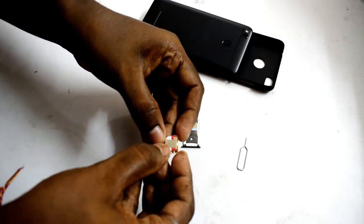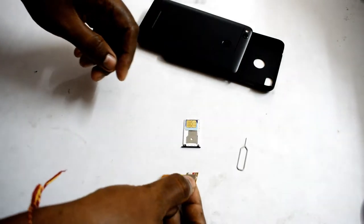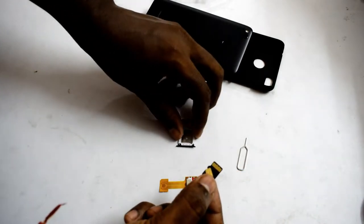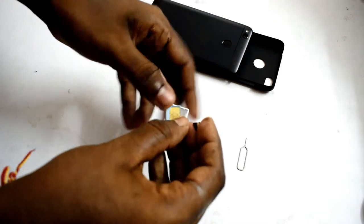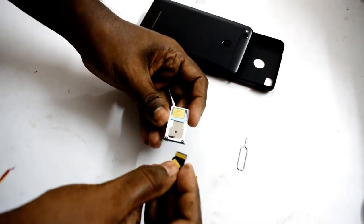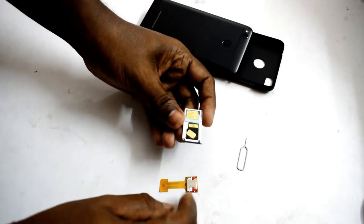Now that the nano SIM is placed in the hybrid SIM adapter, now let me put my SD card into its position. Oh no, okay let me set my primary SIM. Okay, now I am keeping the SD card in its position.